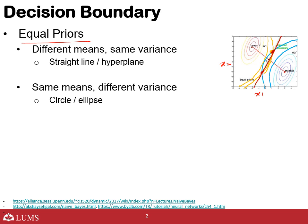When you have the same mean but different variances, one distribution might be wider and another taller and narrower. Where these two distributions intersect, those intersection points become your decision boundary. In one direction you get one class, and in the other direction you get another class. If we take this into higher dimensions, this boundary becomes a circle or an ellipse when the variance is different along different features.